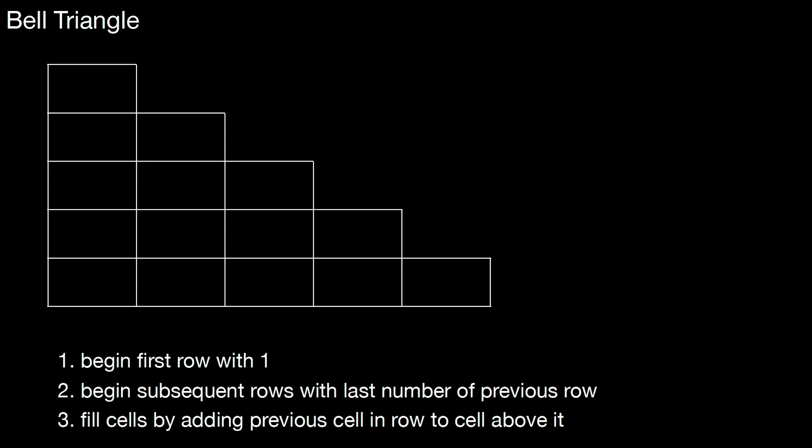So how does that work? You begin the first row with 1. You write down a 1. Then you begin the subsequent rows with the last number of the previous row. Well, the last number of the previous row is 1. Then you fill the cells by adding previous cell in row to the cell above it. That is 1 plus 1 is 2. Already end of the row. So we are back here. Begin subsequent rows with the last number of the previous row. That is 2.